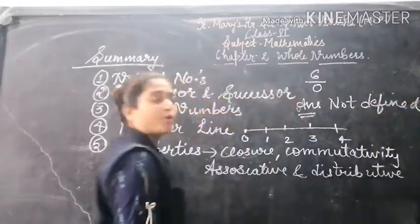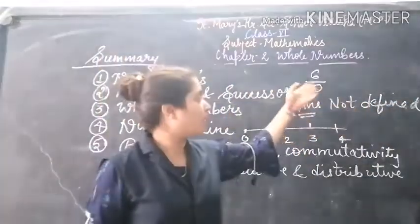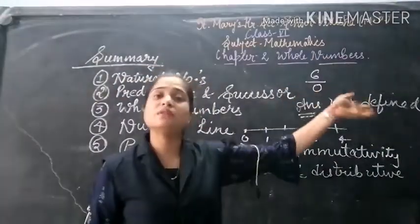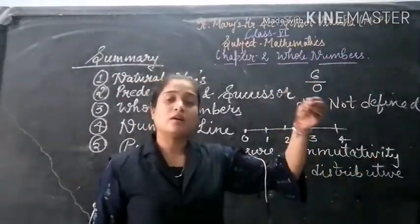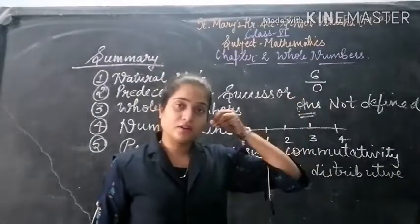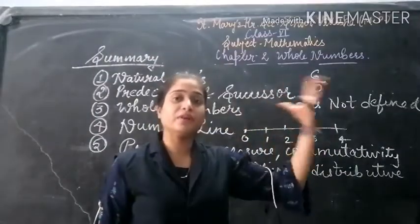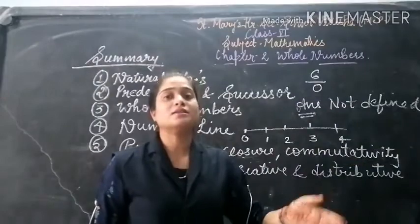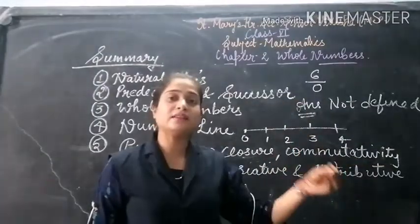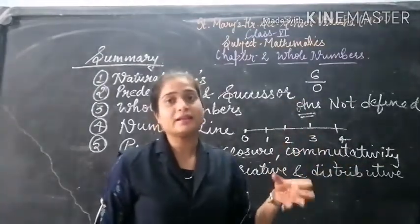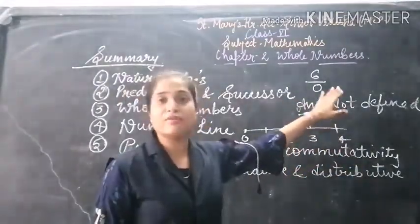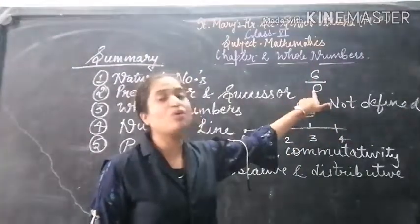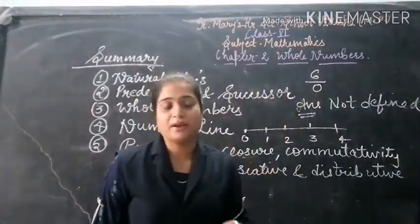We have seen the procedure for why the answer is not defined. Because when we divide, and the divisor is subtracted from the dividend, every step gives the dividend as the answer again. Therefore, when any number is divided by 0, the answer is not defined.